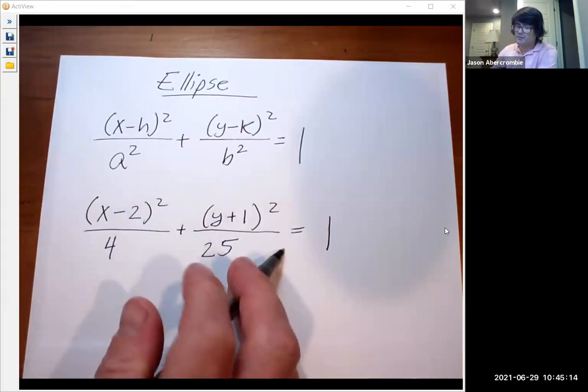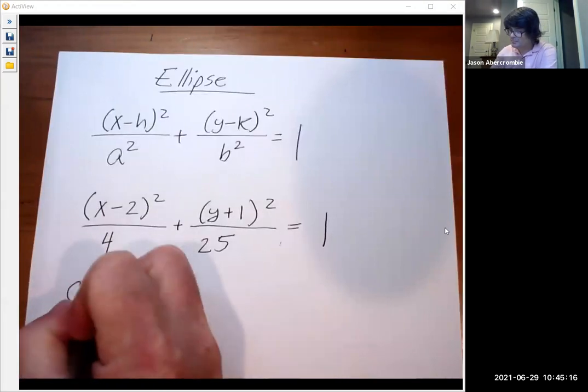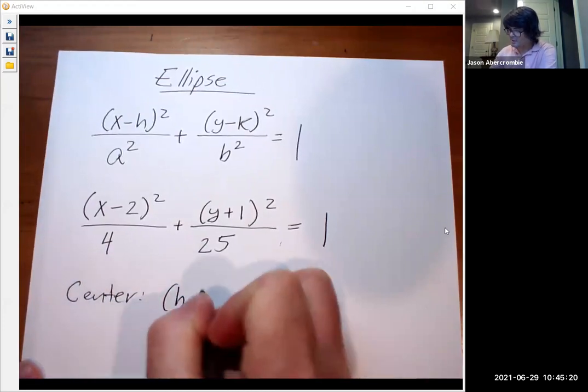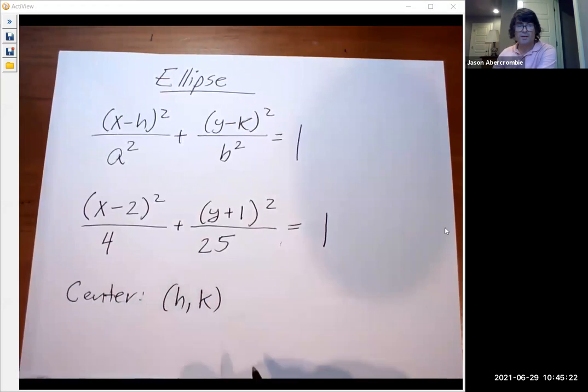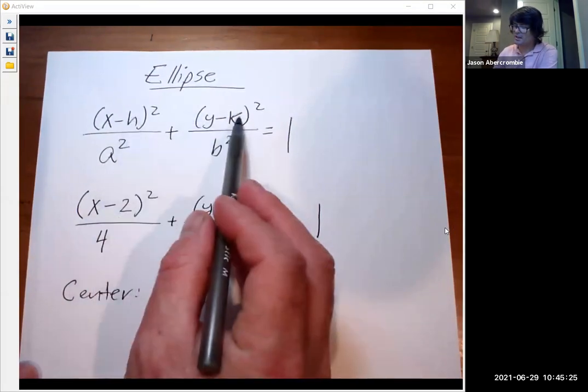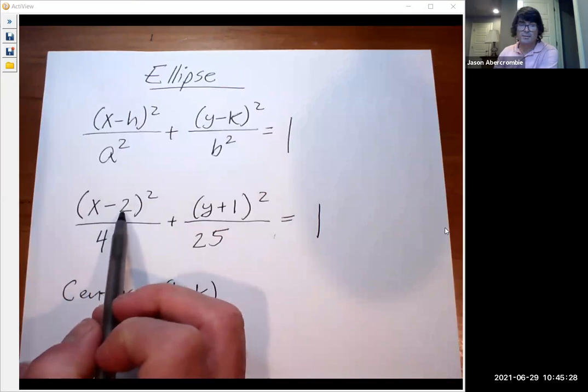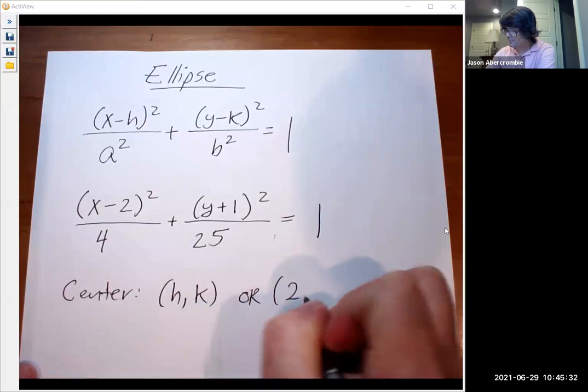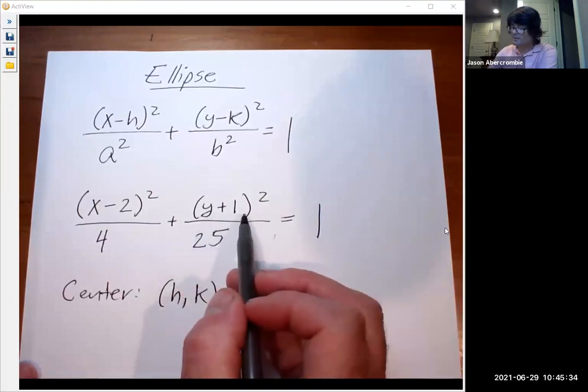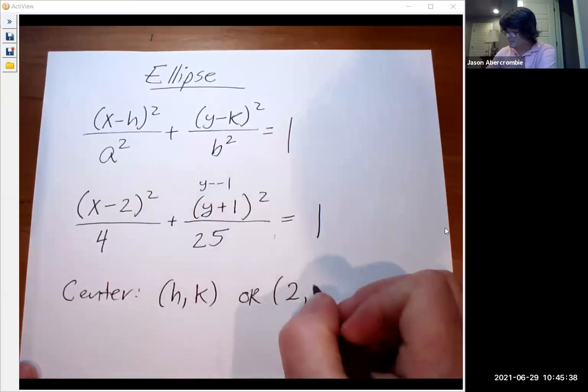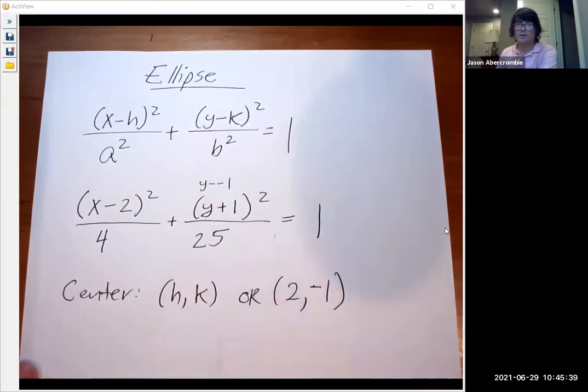So the first thing you need to identify is where is the center. The center is often written as h, k. That's where the ellipse begins. So here's h, here's k. The x coordinate is going to be two. And we have y plus one. That's really like y minus a negative one. So that's going to be the center of two negative one.